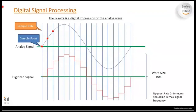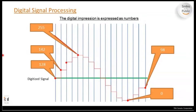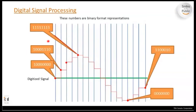The result is a digital impression of the analog wave. You've got your sample rate, sample points, and how many points are taken along that travel. The digitized signal looks very chunky, but the higher the sampling rate and the more sample points, the smoother this conversion becomes. Higher quality DSP will have a smoother conversion from analog to digital as well as from digital back to analog output. These sample points are expressed as binary numbers — that's the conversion that takes place.